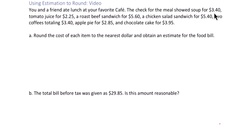Looking at 3.40, we can look to the right of the decimal and see that this is below five, so we round down to three dollars. For 2.25, look to the right of the decimal — it's below five, so we're rounding down to two dollars.